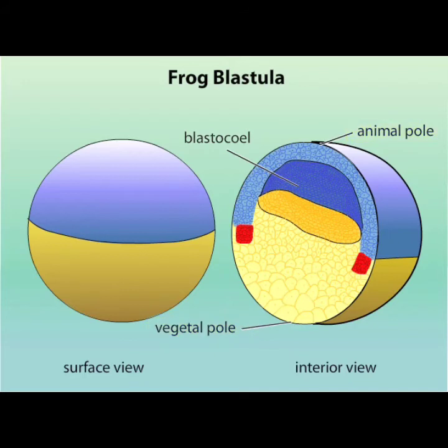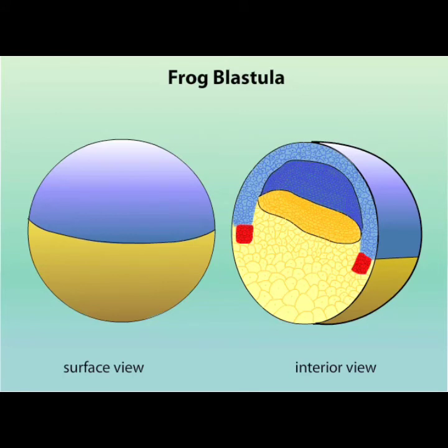The three colors represent the three tissue layers that become defined early in embryogenesis. Yellow indicates endoderm, red indicates mesoderm, and blue indicates ectoderm.